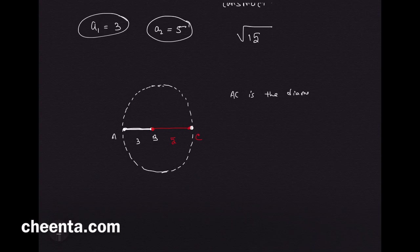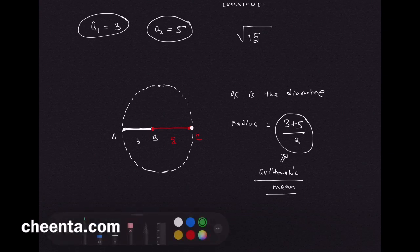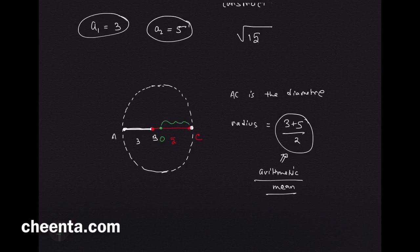AC is the diameter of that circle, and that means the radius is (3 + 5) over 2. Notice that the radius is the arithmetic mean of these two numbers. You can take the midpoint of this, let's call it O. Then OC is the arithmetic mean of these two numbers that you started off with, 3 and 5.